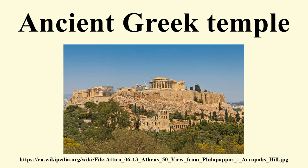An amphiprostyle repeats the same column setting at the back. The term peripteral designates a temple surrounded by a pteron on all four sides, each usually formed by a single row of columns, producing an unobstructed surrounding portico on all four sides. A Hellenistic and Roman form is the pseudo-peripteral, where the side columns of the peristasis are indicated only by engaged columns or pilasters directly attached to the external cella walls.